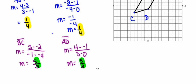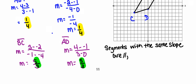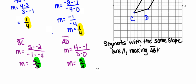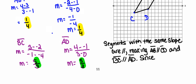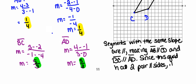At this point, I need to write a little blurb explaining why the calculations I've done prove that this quadrilateral is indeed a parallelogram. I'm going to say: segments with the same slope are parallel. This makes side AB parallel to side CD, and at the same time side BC parallel to side AD. Since this quadrilateral has two pairs of sides that are parallel, it must be a parallelogram.